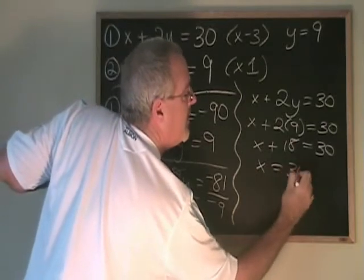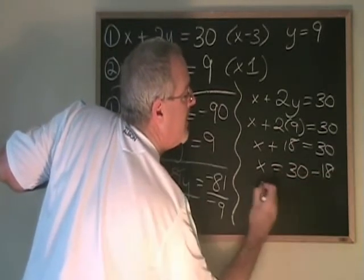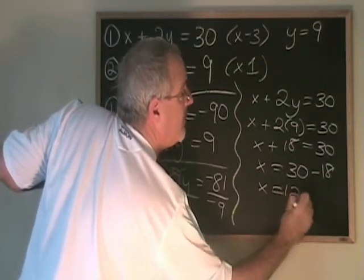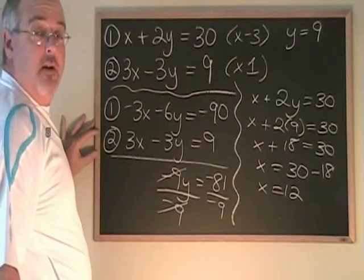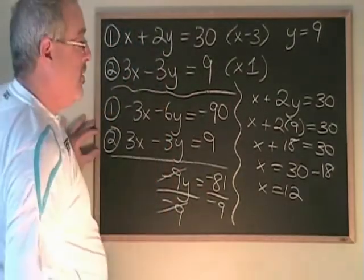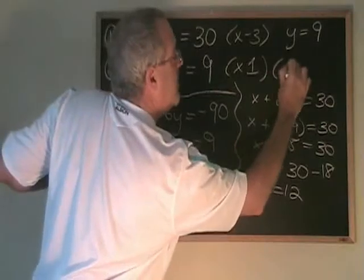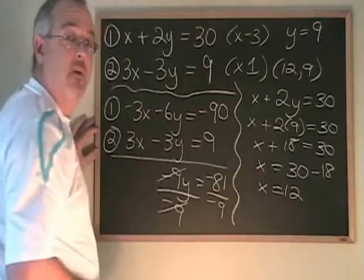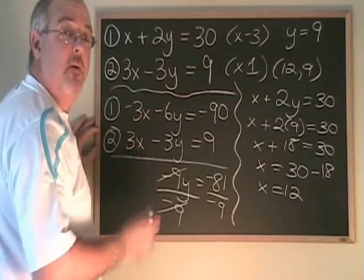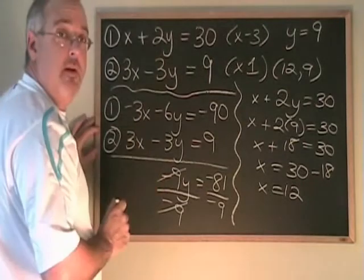x equals 30 minus 18. x is therefore equal to 12. The point of intersection of this system of equations is going to be 12, 9, which is the same answer that we got when we did the same example eliminating the y's.